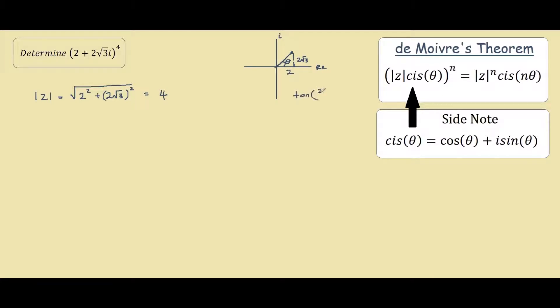So if you find the tangent of 2 square root of 3 over 2, you would get 60 degrees, and if you convert that to radians you get pi on 3. So our theta is pi on 3.